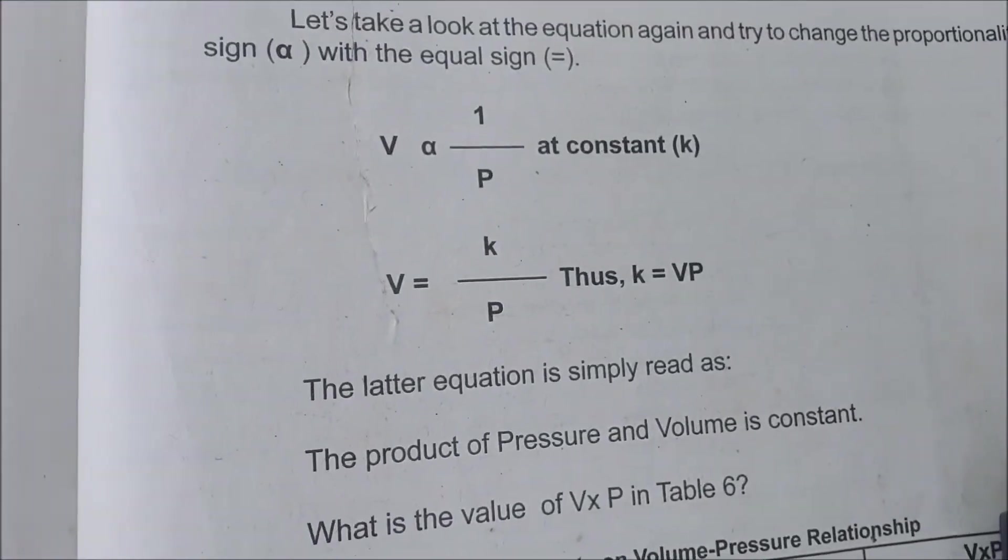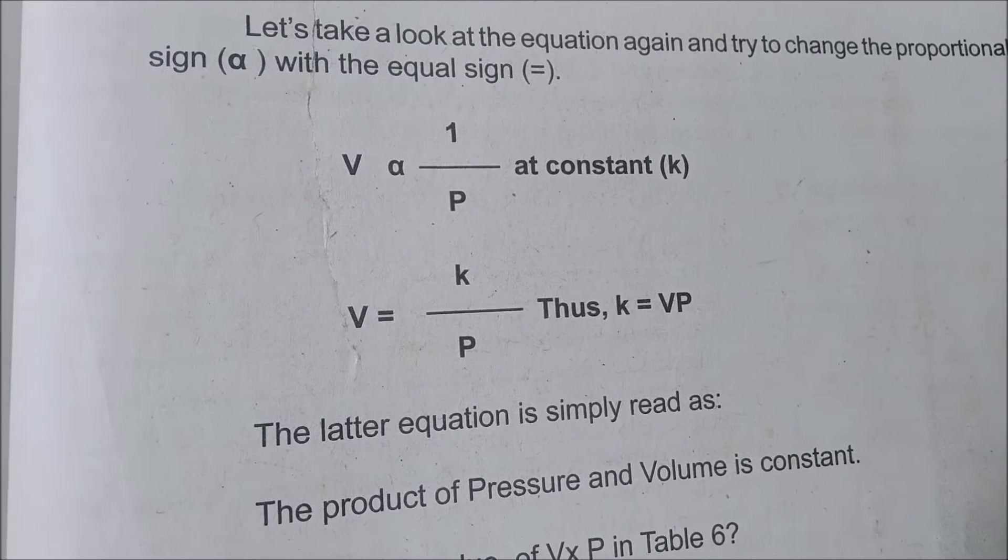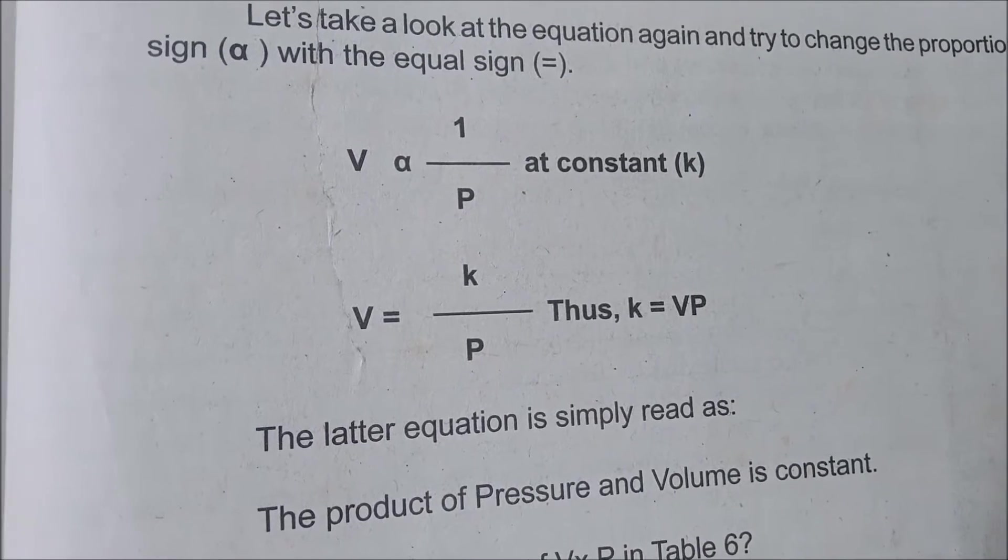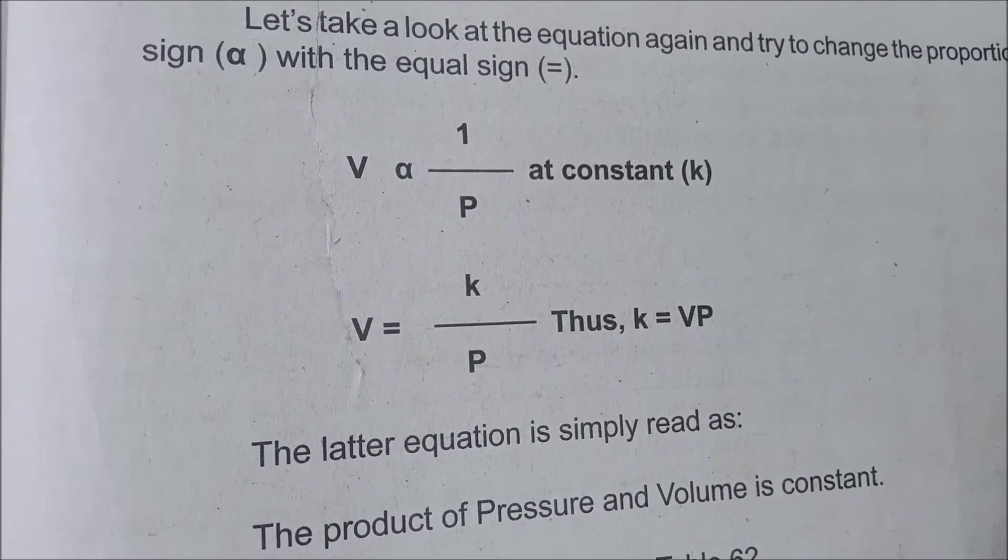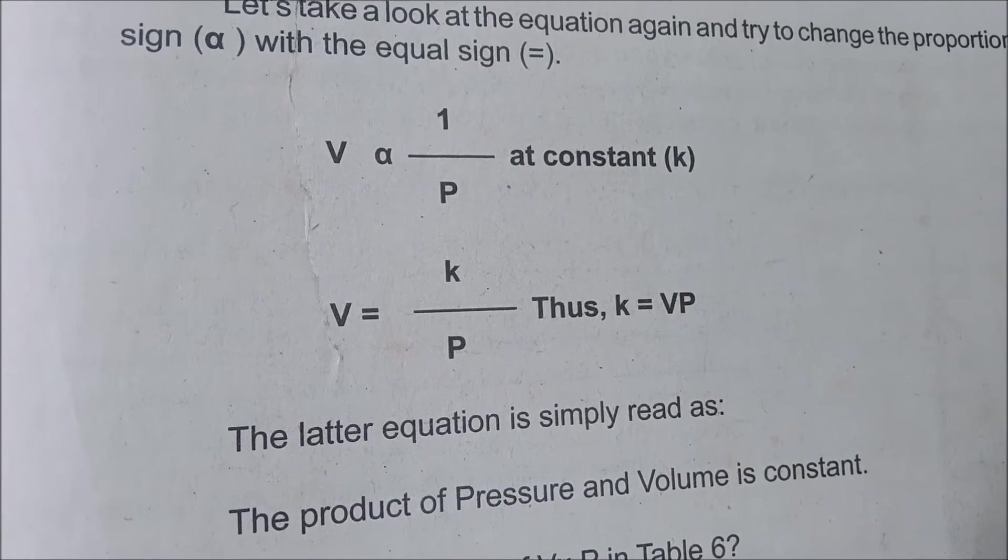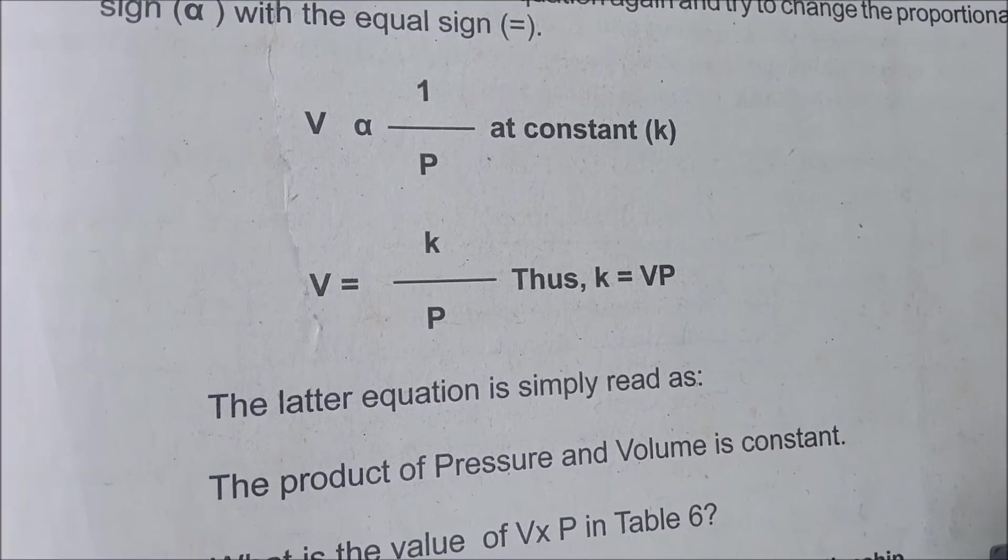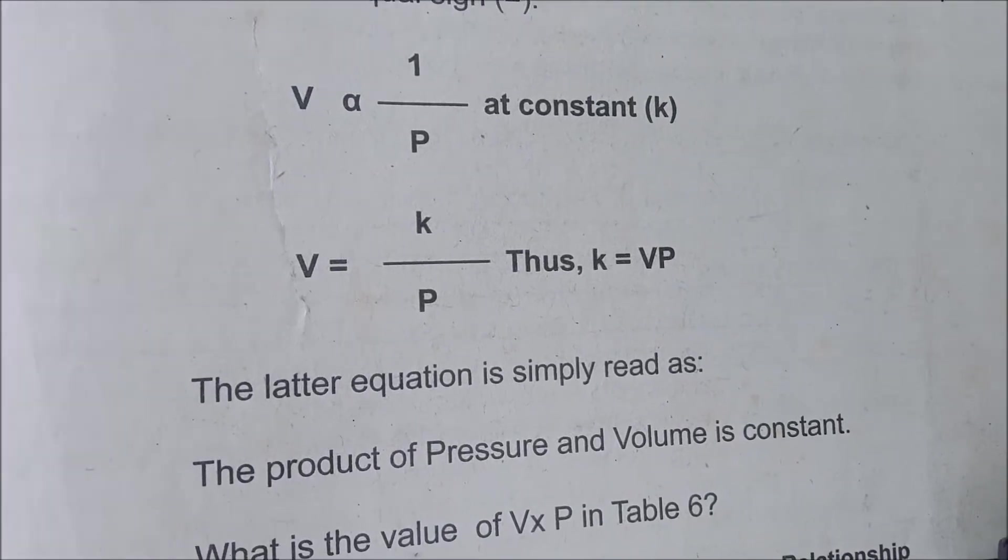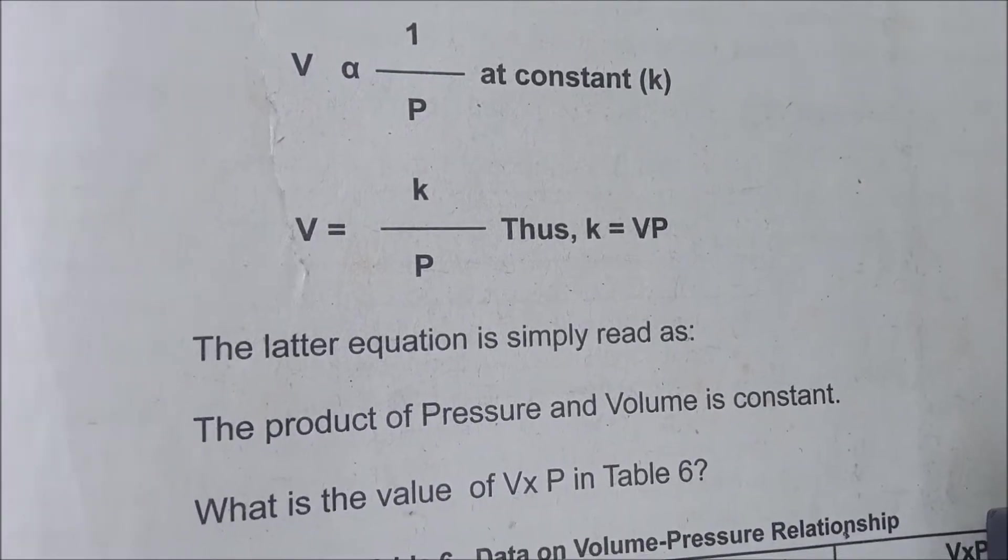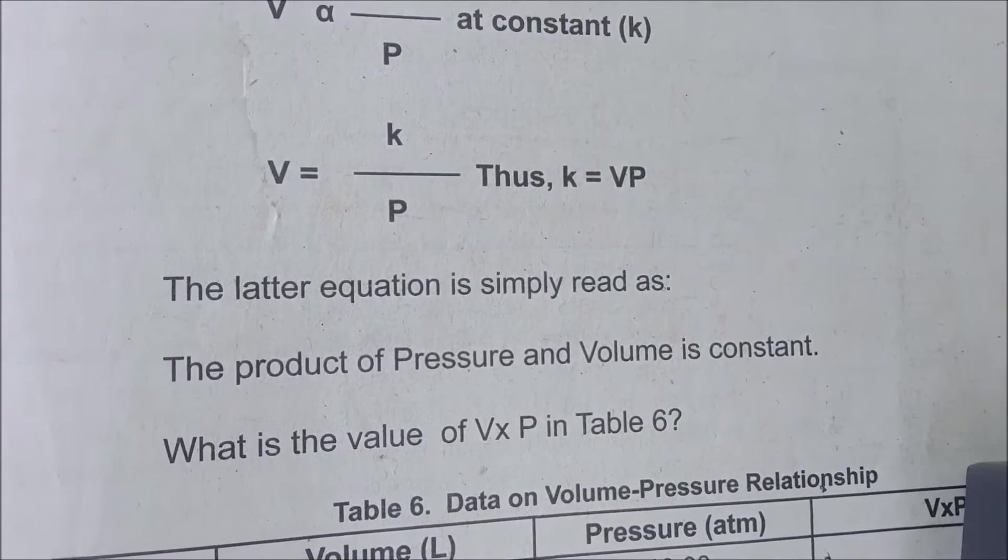If you're going to take a look at your book, it says there, volume is directly proportional to 1 over P at constant. Or written, V volume is equal to K over P. The latter equation is simply read as the product of pressure and volume is constant.